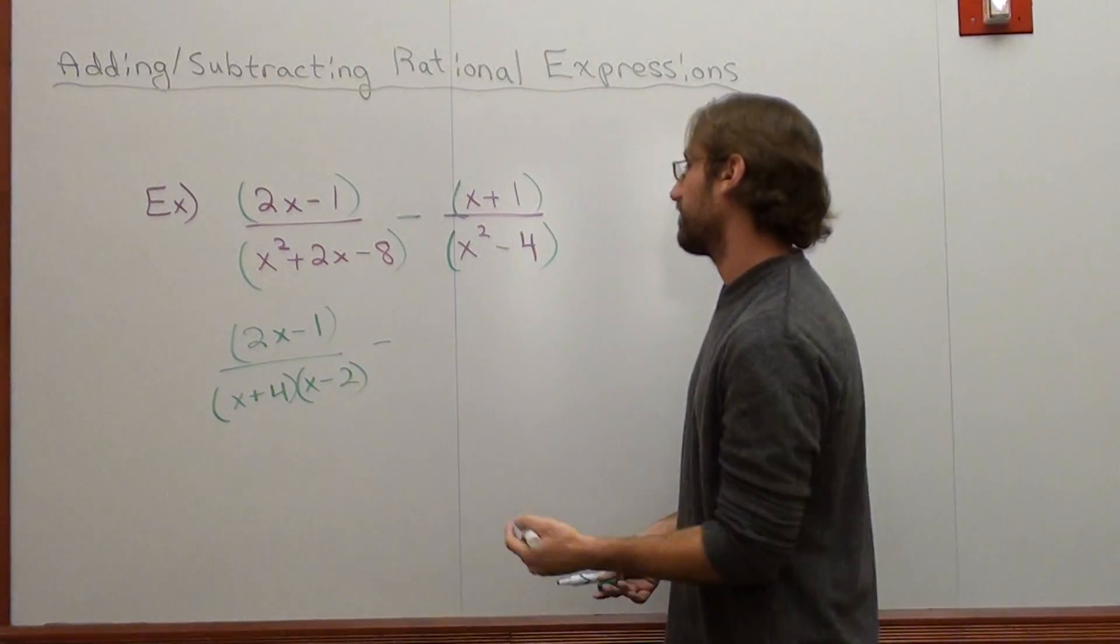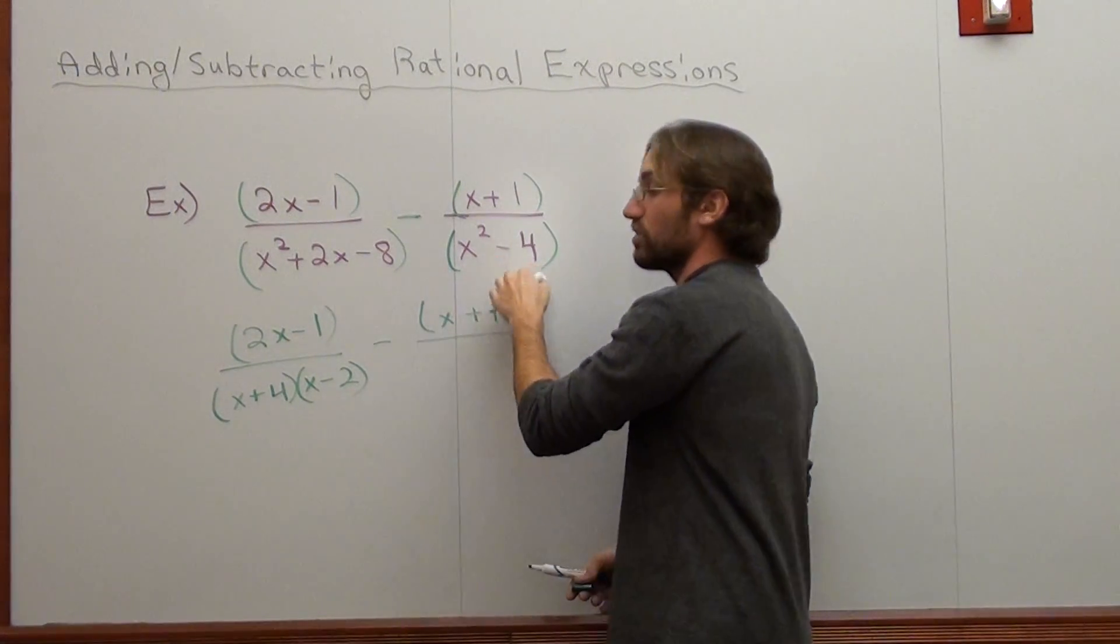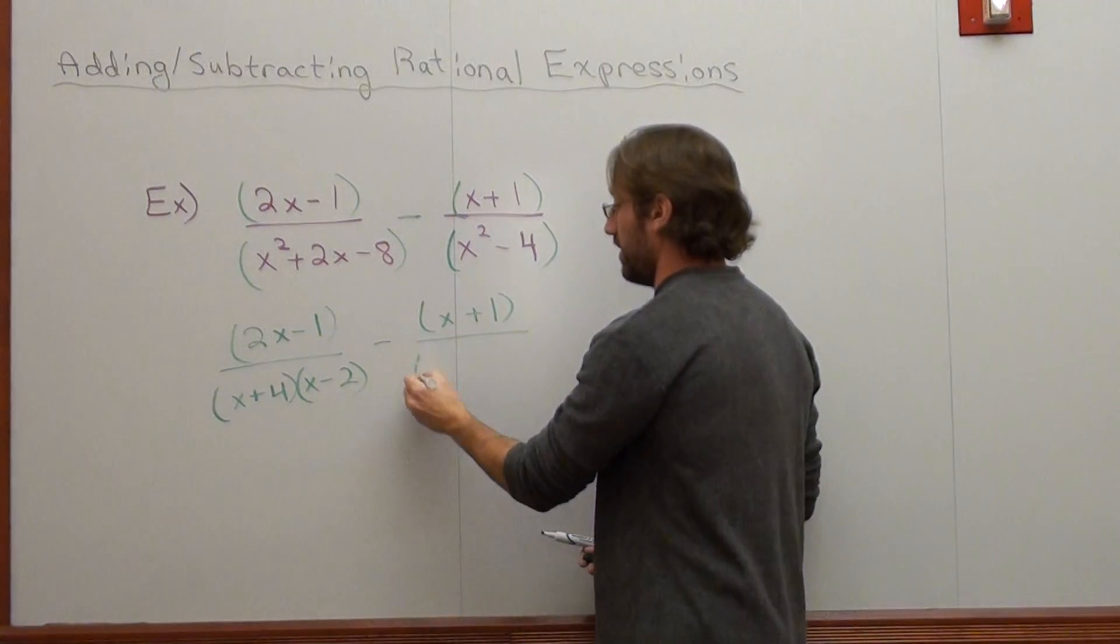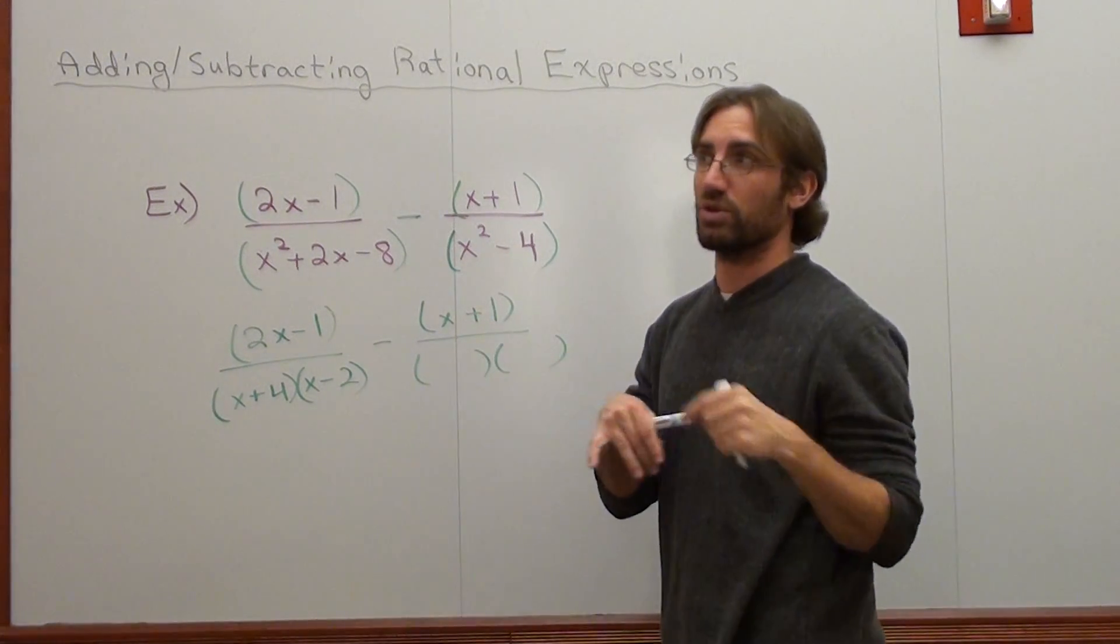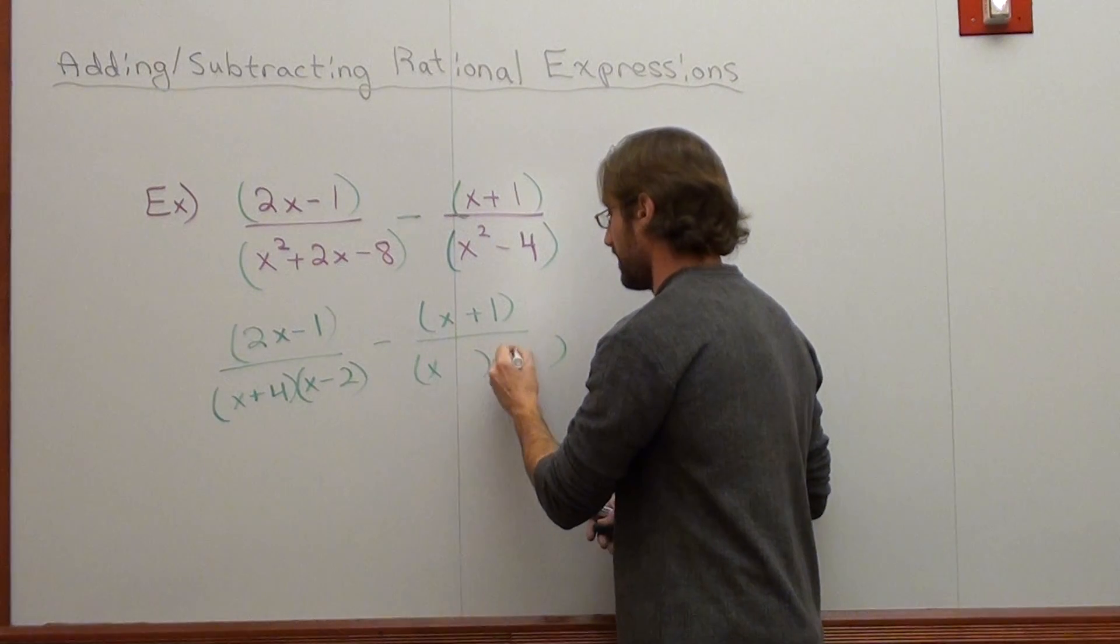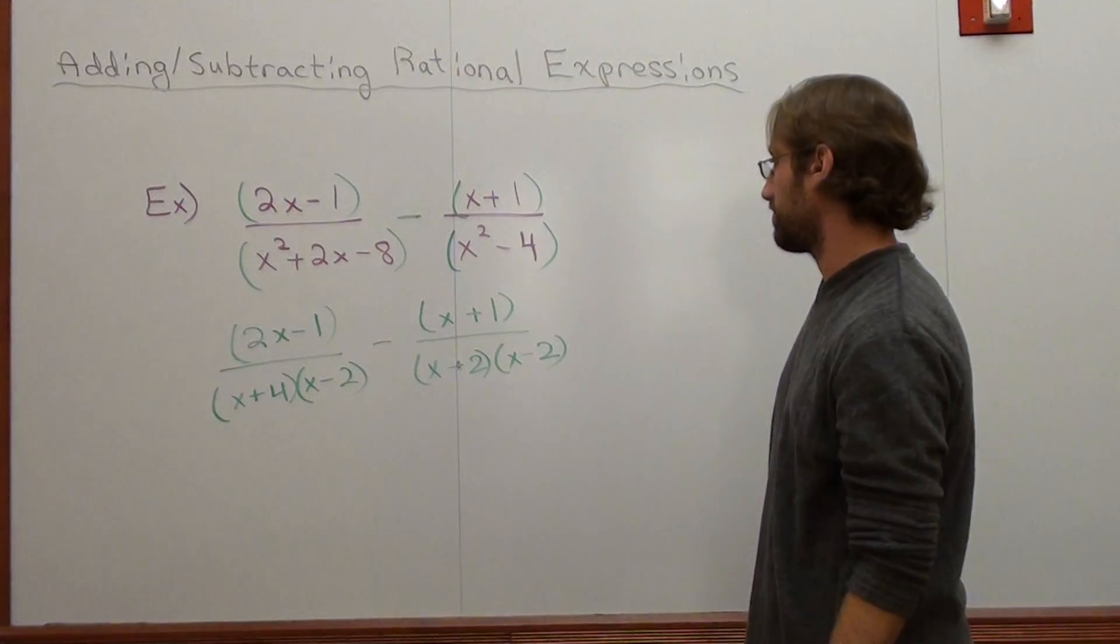And I'm going to subtract x plus 1. And this is the difference of two perfect squares: x squared subtract 4. The difference of two perfect squares is when there's two terms and both terms are perfect squares. x and x, plus and minus, 2 and 2.